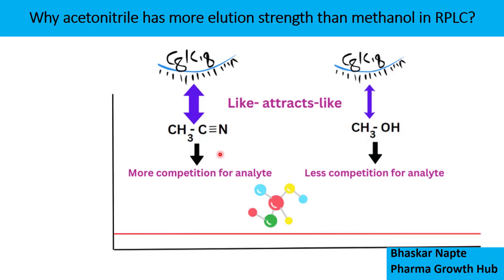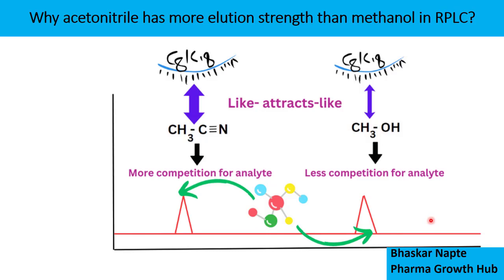When you consider ACN, it is less polar than methanol, so it gives higher competition to the analyte for interaction with the stationary phase — because the stationary phase also prefers ACN being less polar. Because of this greater competition, in the case of methanol, there is less competition and your analyte stays longer on the stationary phase — it gets retained for a longer time. However, in the case of acetonitrile, which is also in good competition, ACN can repel your analyte out of the stationary phase, making it elute a little early. The polarity of methanol or ACN thus makes a difference in retention or elution strength.